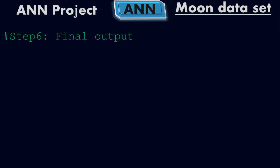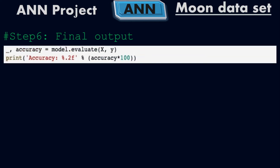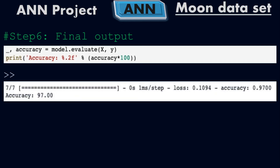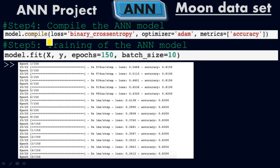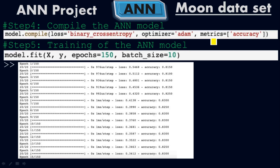Step six is the final evaluation. The code is: accuracy = model.evaluate(x, y), then print accuracy * 100. When you run it, you get 97% accuracy. Looking back at the compilation step, we specified metrics=['accuracy'], and multiplying by 100 gives 97%. The loss is only 0.1094, meaning approximately 10% loss, so this is a very good model.